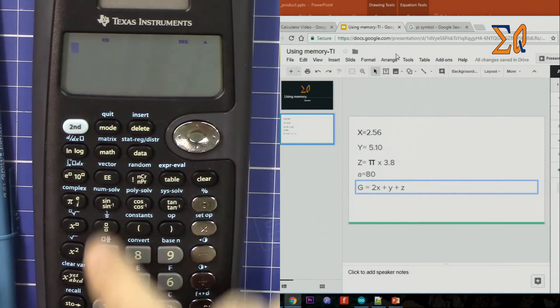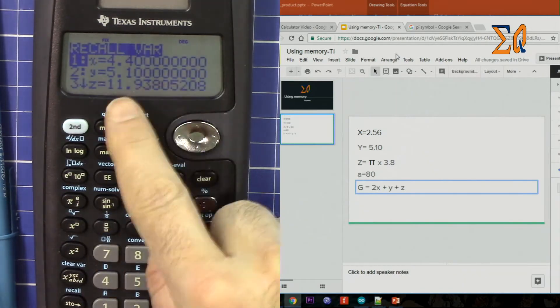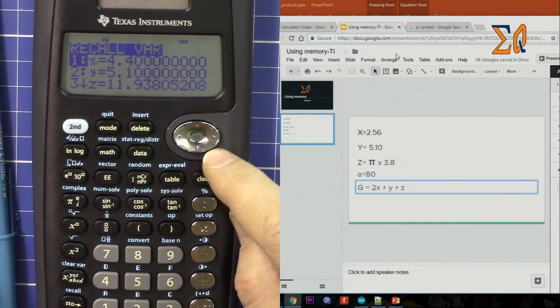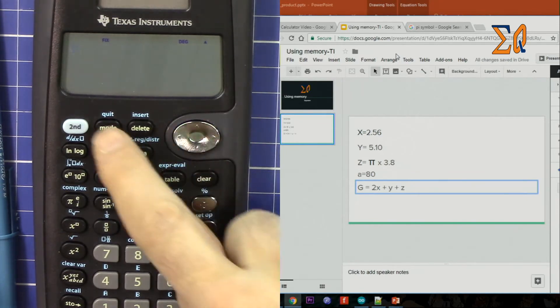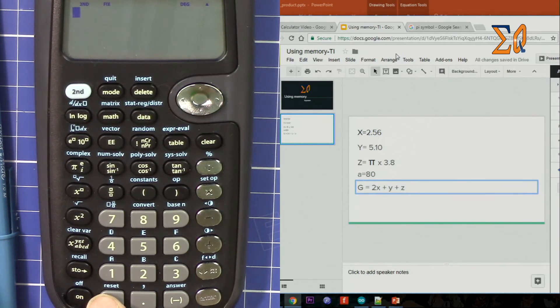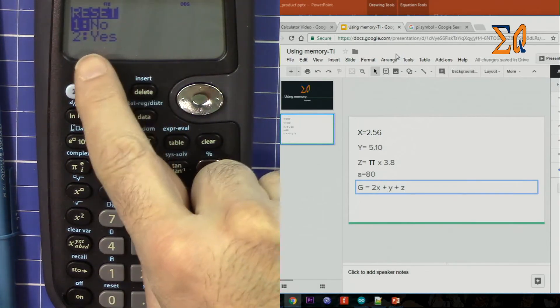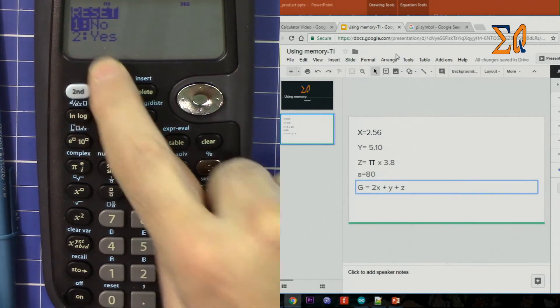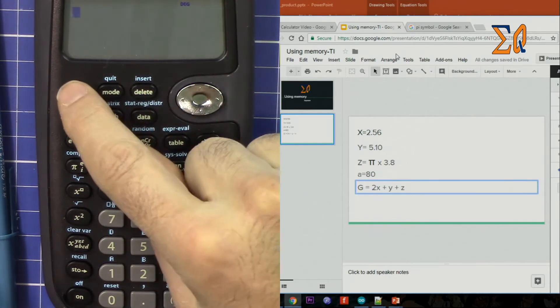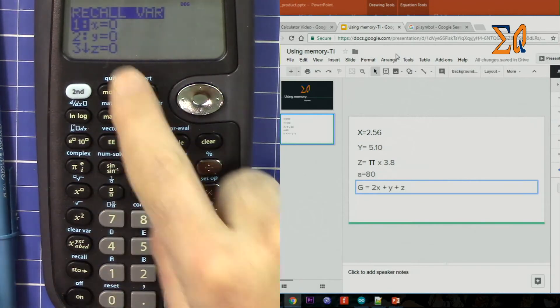And in case you need to clear the memory, because sometimes when I press second function recall all the values, if you want to clear them all, sometimes you need to clear it. So press second function and then reset that zero. And then it says reset, yes or no. For yes, press 2. Memory cleared.